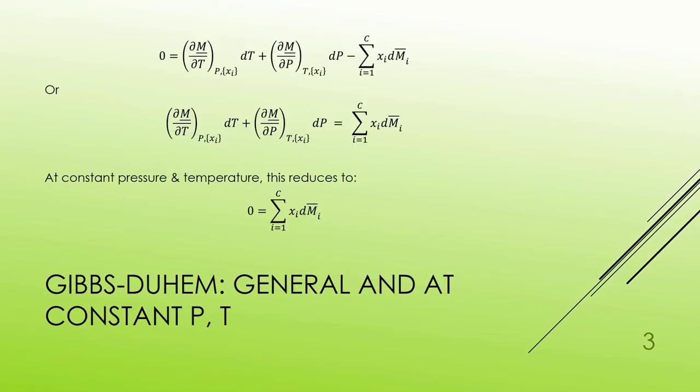What we had developed last time is a general form of the Gibbs-Duhem equation, which is at the top, where M represents any property like internal energy, enthalpy, Gibbs energy, Helmholtz energy, entropy, or something like volume.